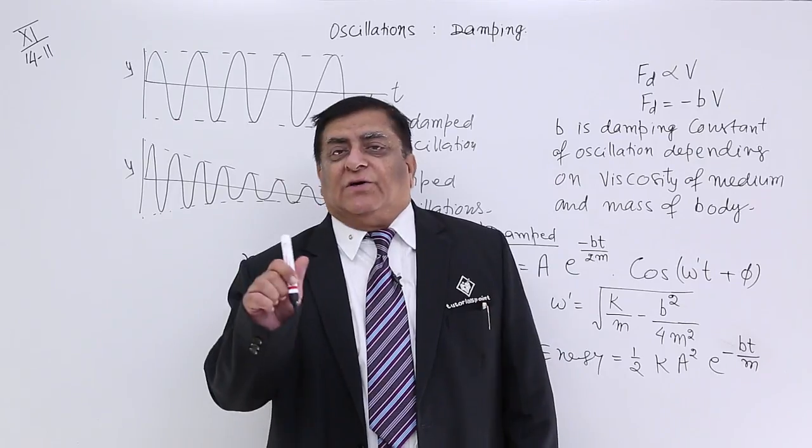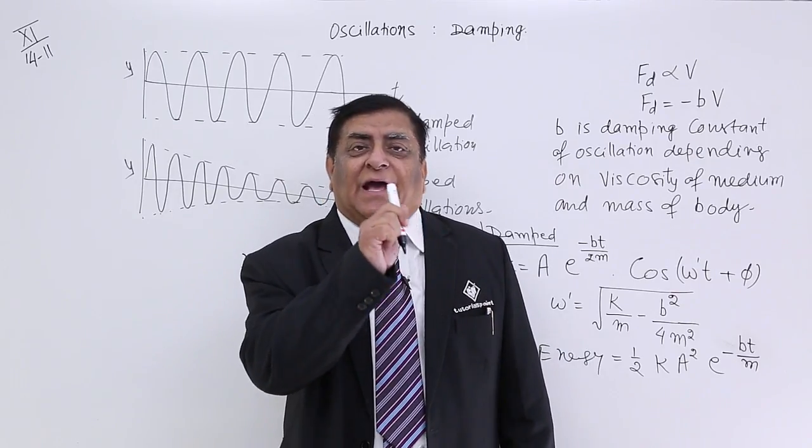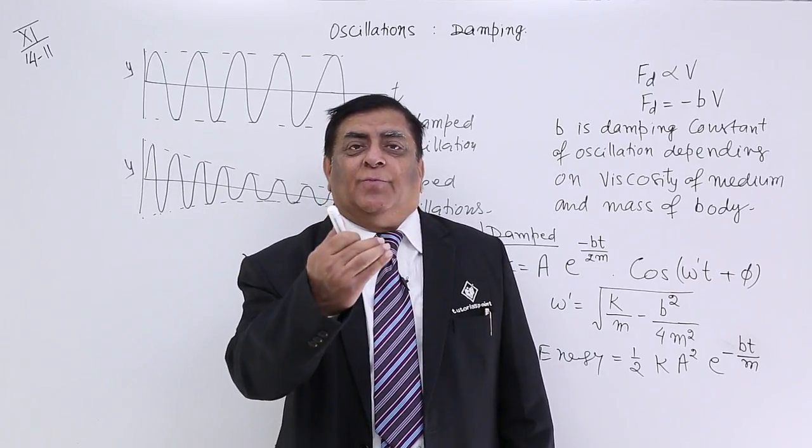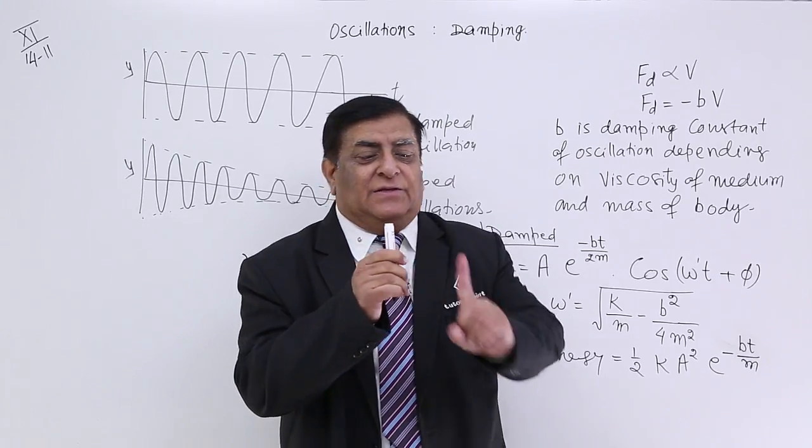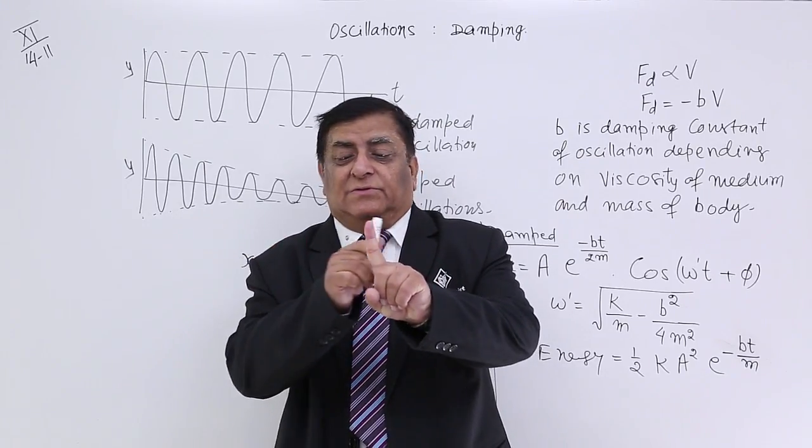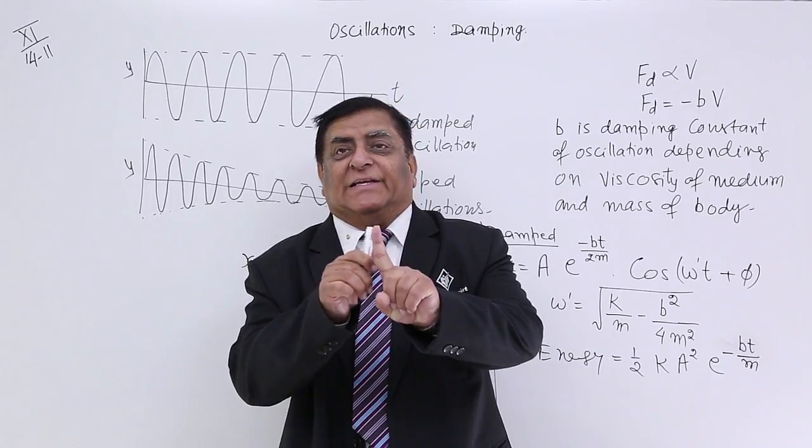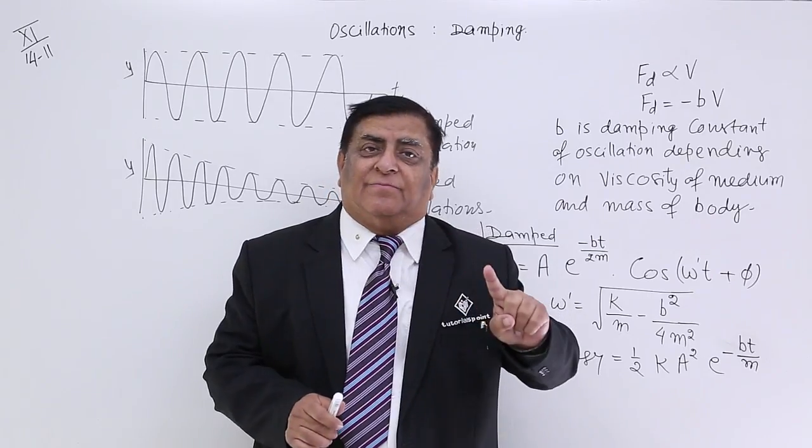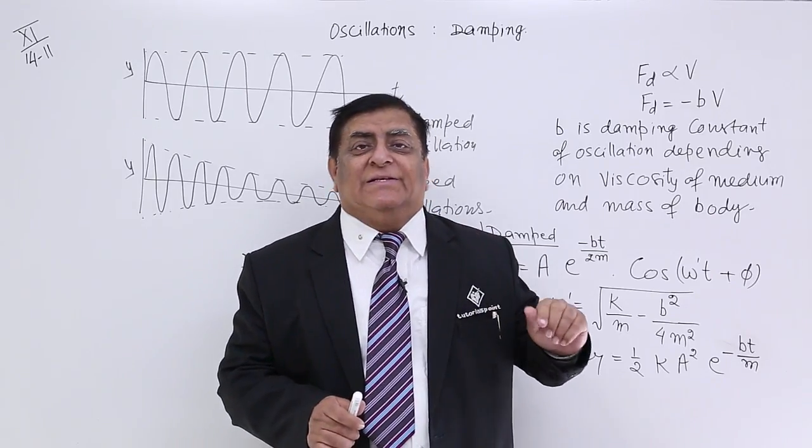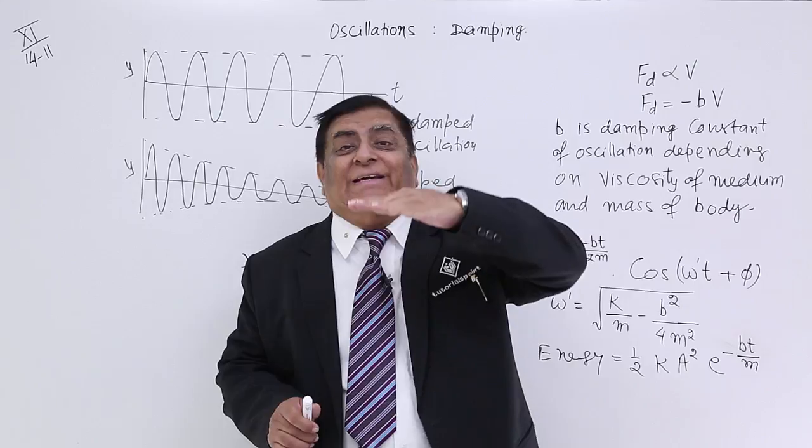So, the complete motion should move like this. Now, because it has stopped and after every moment, after every oscillation, we have seen that amplitude keeps on decreasing. So, if we make a graph between amplitude and time, when the time increases, the amplitude decreases.